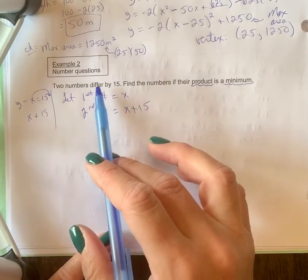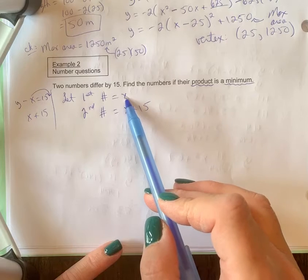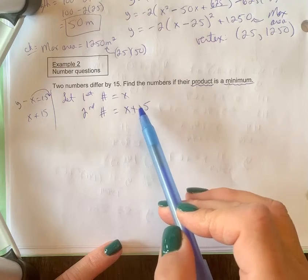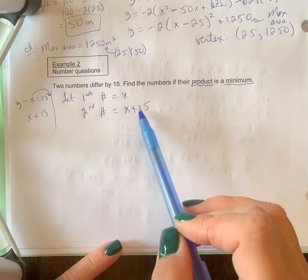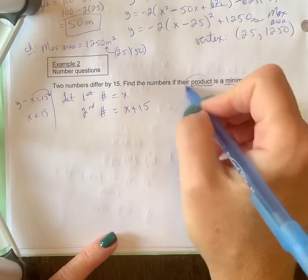It gets a bit confusing because I used a plus sign yet I said difference, but if you think of a number - let's say the number was five, if it differed by 15 I would go five plus 15 to find out my next number is 20. So five and 20 still differ by 15.